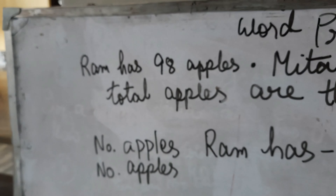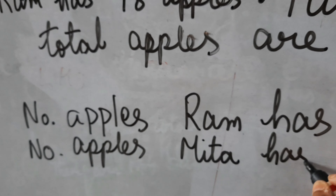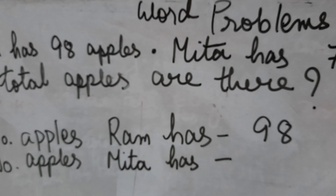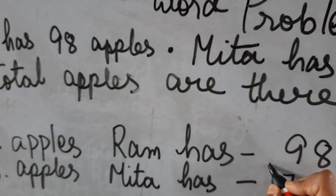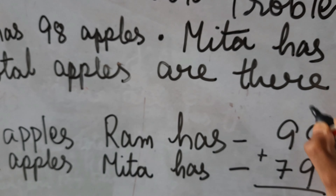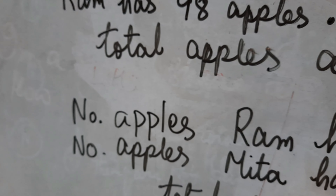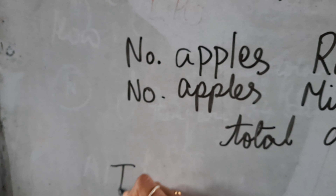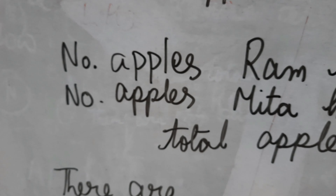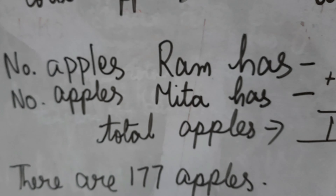Now number of apples Meeta has. Meeta has how many apples, children? 79. I will write here 79. And this is total, so I will put a plus sign over here and I will add this. Total apples — what do you write? Total apples. There are 177 apples.